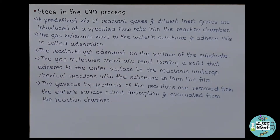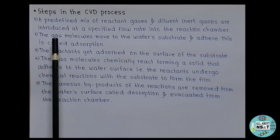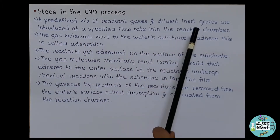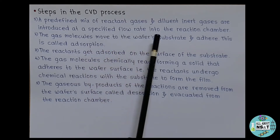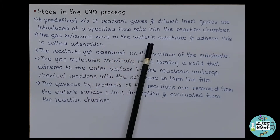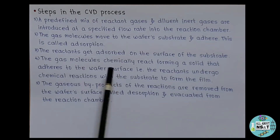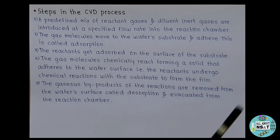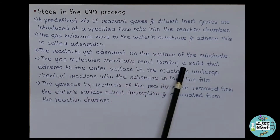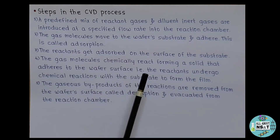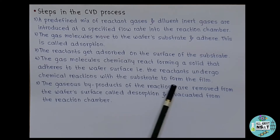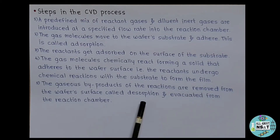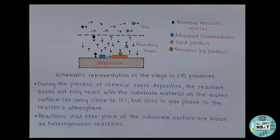The different steps involved in the CVD process are: first, a predefined mix of reactant gases and diluent inert gases are introduced at a specified flow rate into the reaction chamber. Then the gas molecules move towards the wafer substrate — this is called adsorption. The reactants get adsorbed on the surface of the substrate, then chemically react forming a solid that adheres to the wafer surface. Finally, the gaseous byproducts are removed from the wafer surface and evacuated from the reaction chamber.